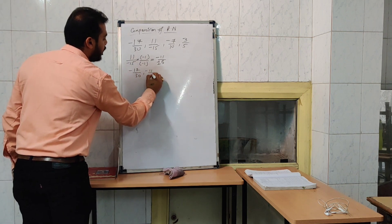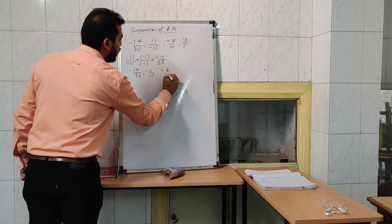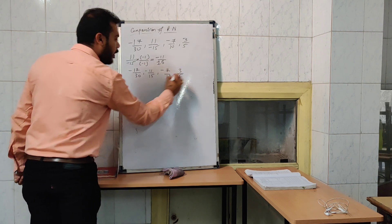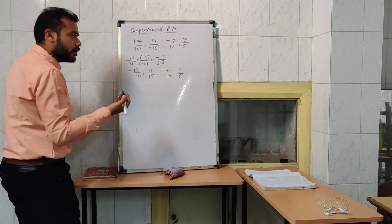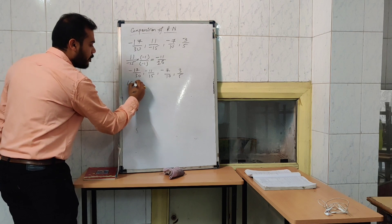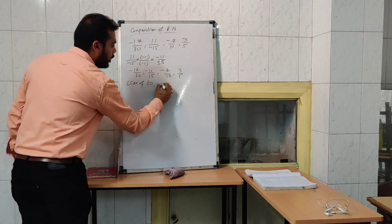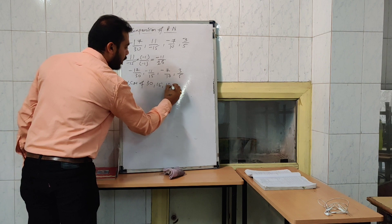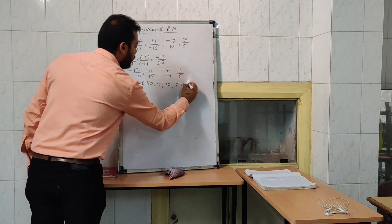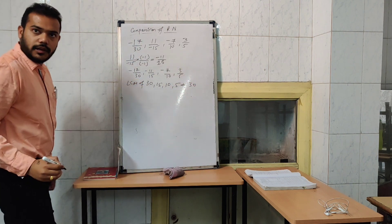Now the rational numbers are: minus 17 by 13, minus 11 by 15, minus 7 by 10, and 3 by 5. Now follow the same process — take the LCM of the denominators: 13, 15, 10, and 5.